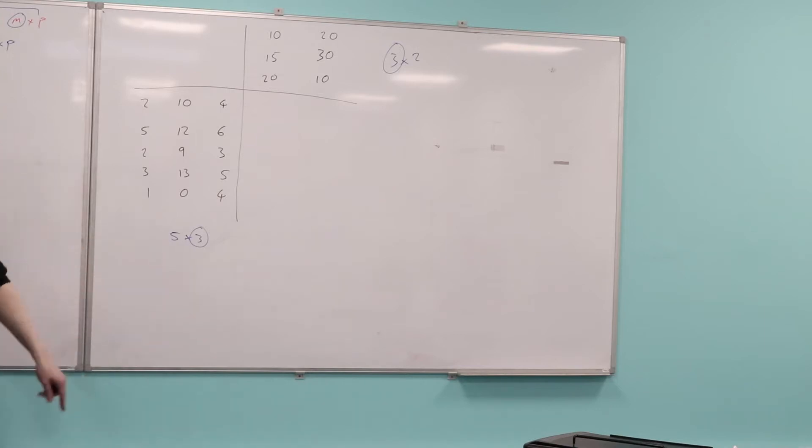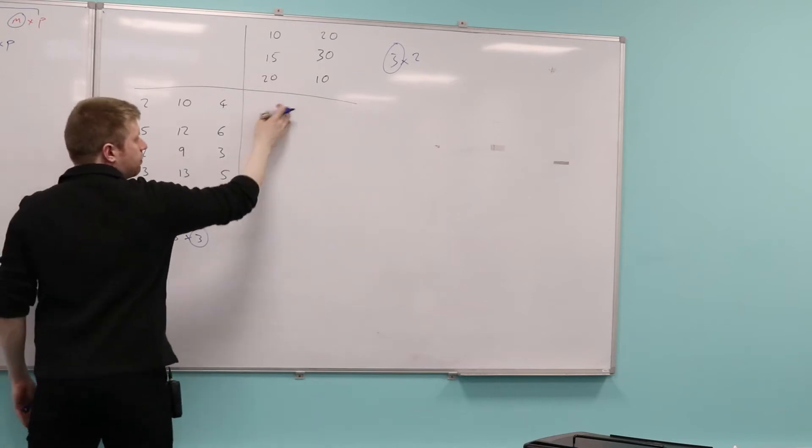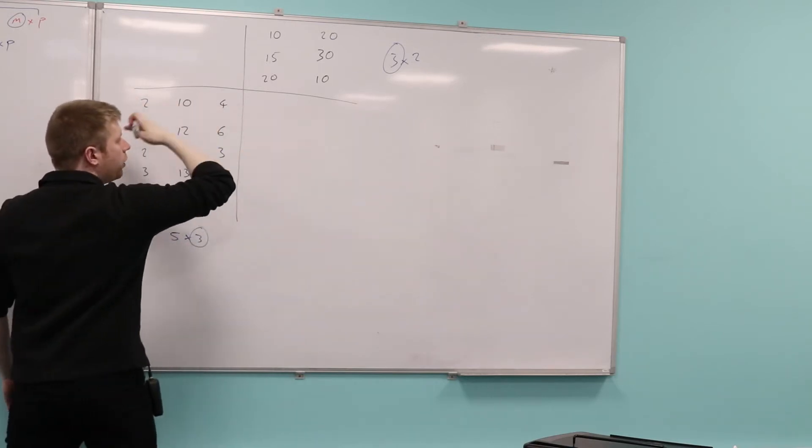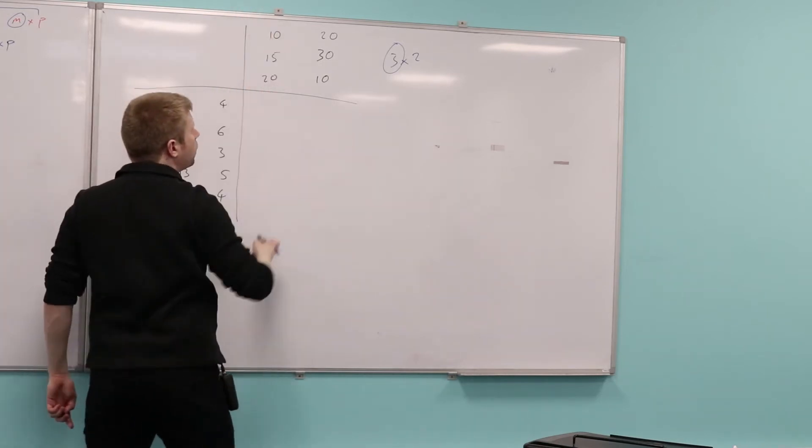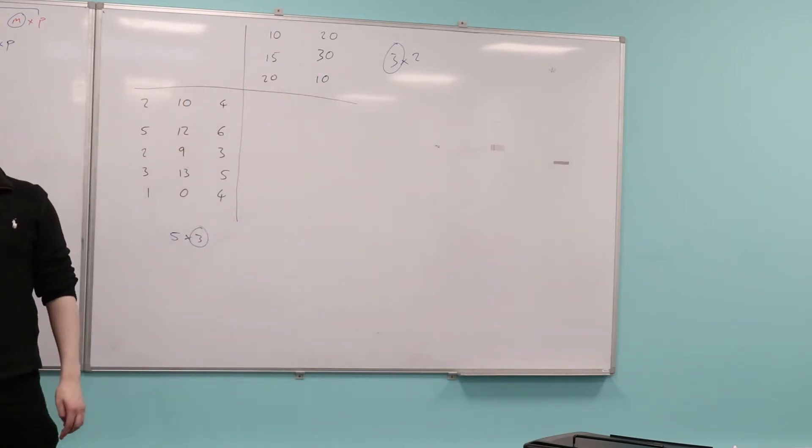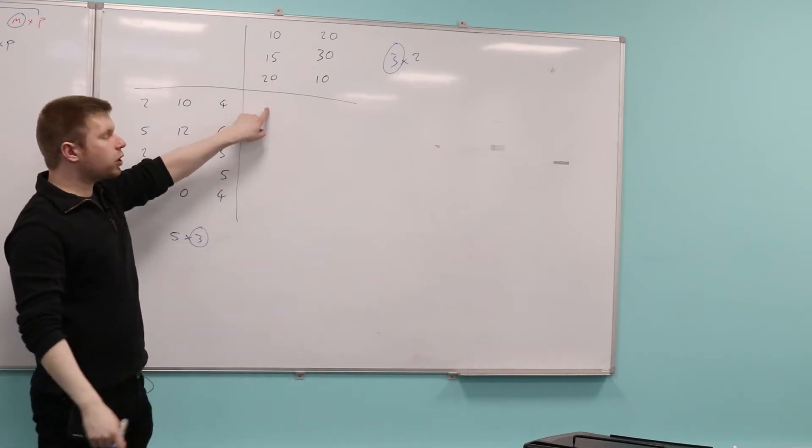It's going to be five by two. Exactly, five by two. And because I've written it like this, you can see that. Can you see that the resulting matrix should go here? There should be one, two, three, four, five rows, and there should be one, two columns. Can you see that?